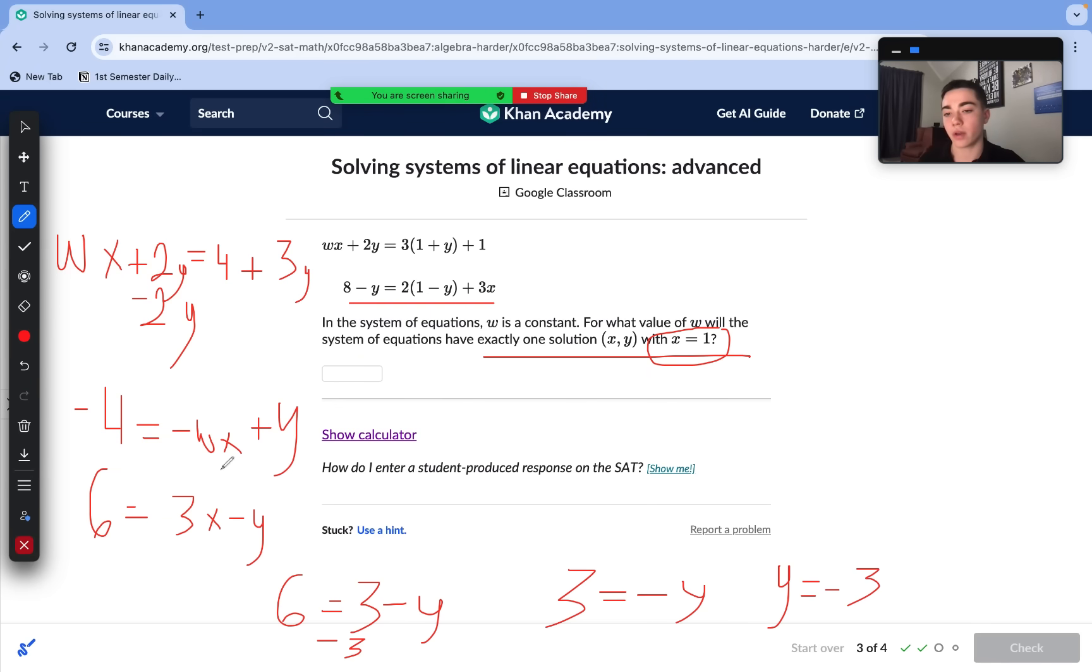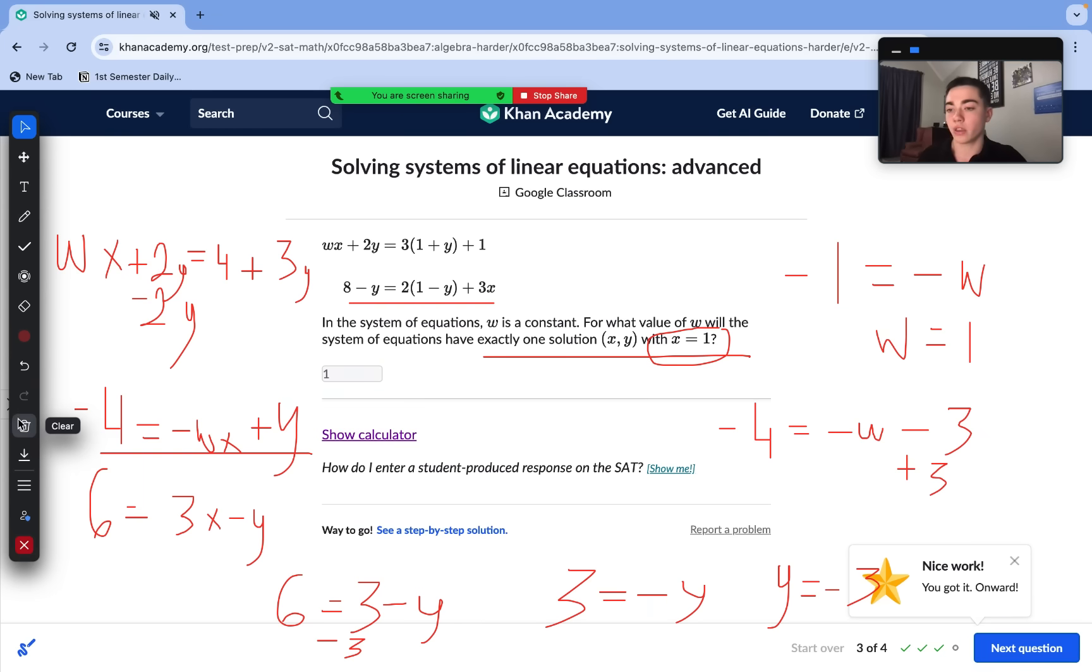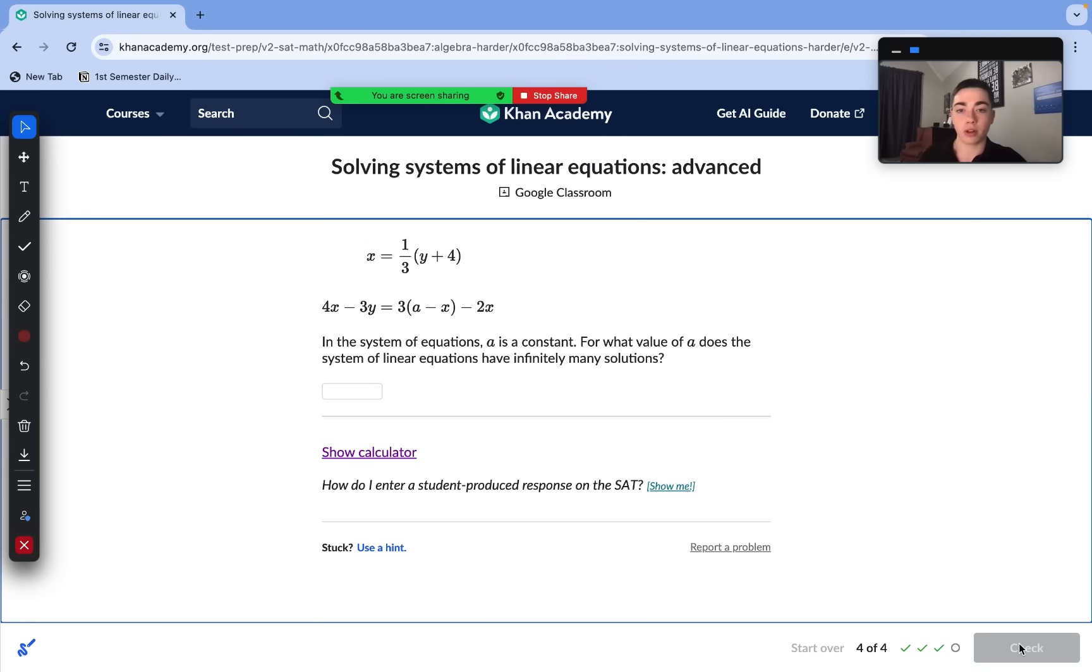x equals 1, y equals negative 3. We can just substitute both these values into our first equation to find what w needs to be equal to. So doing that, we have negative 4 equals negative w minus 3. We add 3 to each side. Negative 4 plus 3 is negative 1. And negative 1 equals negative w. So w equals 1 as well. So what value of w? Well, the systems of equations have exactly one solution with x equaling 1. Well, 1 for w. So this question, it was a little bit harder. We had to do a little bit more manipulation. And instead of dealing with no solutions or infinitely many solutions, we were dealing with one solution here. Make sure to follow exactly my steps for similar type questions.